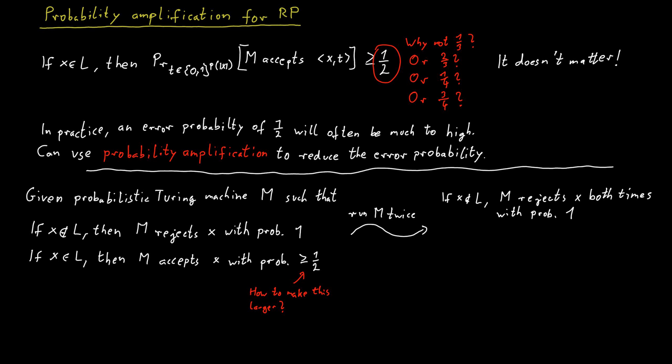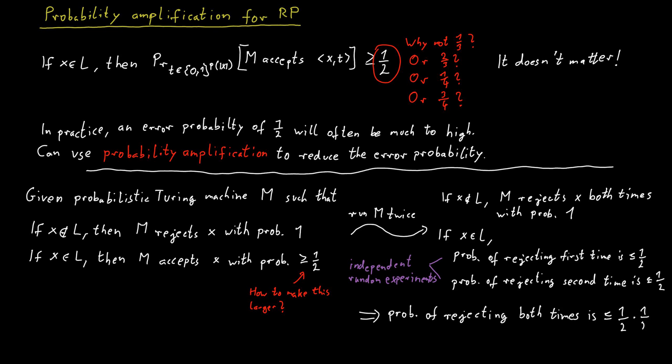Now, if the word is in the language, what is the probability that the Turing machine will reject both times? So, the probability that the Turing machine will reject the first time is at most one-half, and the probability that the Turing machine will reject the second time is also at most one-half. And these are independent random experiments. So, the probability that it will reject both times is simply one-half squared, which is just one-quarter.